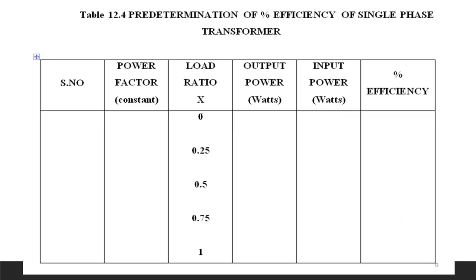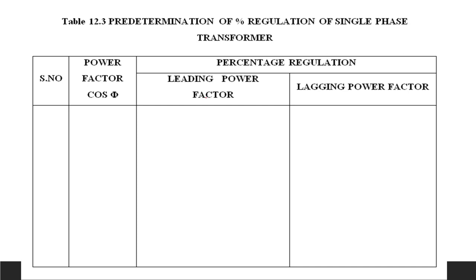To find the efficiency, fix the load ratio x at values 0, 0.25, 0.5, 0.75, and 1. The power factor can be kept constant at 0.8 for all readings. Calculate the output power, input power, and efficiency for each corresponding load ratio and power factor. This is the predetermined methodology for calculating the efficiency of a single-phase transformer.